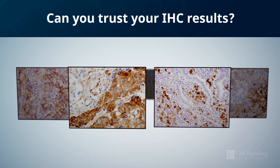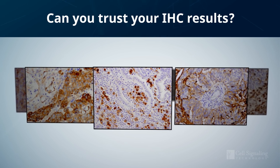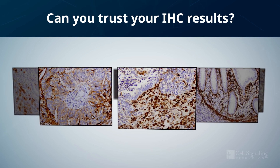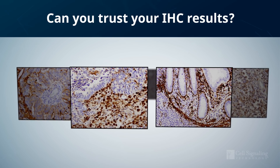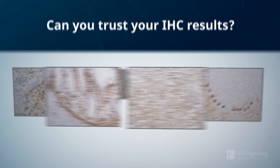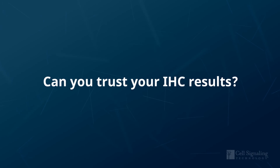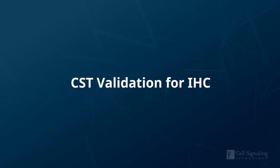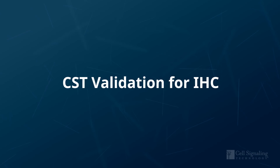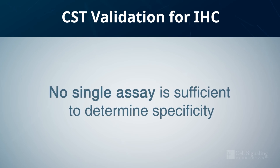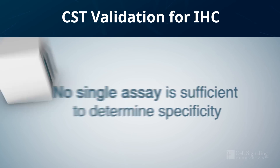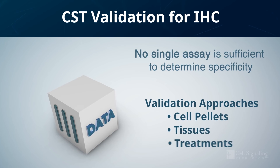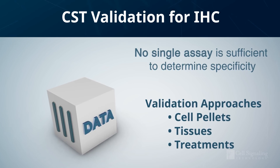Immunohistochemistry, or IHC, remains the simplest method for detecting biomarker expression while maintaining spatial context within tissues. Getting reliable IHC staining results hinges on the specificity and performance of your antibody. These are high-stakes experiments and you want to be one hundred percent confident your antibody will detect the target of interest. This is the value that validation can provide. But what does validation for IHC entail? No single assay is sufficient to determine specificity — a comprehensive data package is required. In this video, we'll explore several different approaches for IHC validation that can go into that data package.